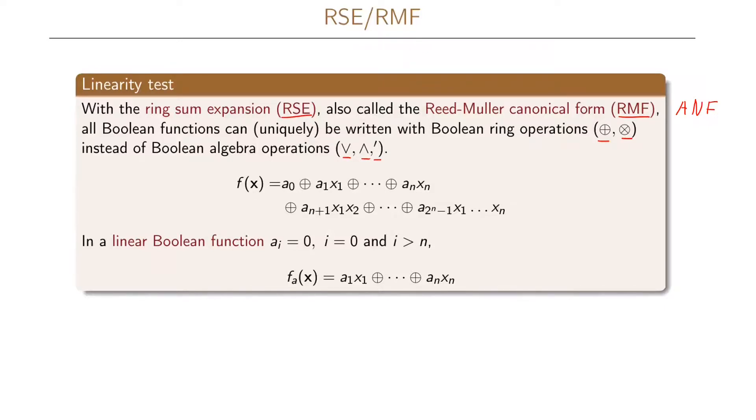Using this canonical form, we write the function f of x, and we have a function now with n variables. So this will be a sum of all possible combinations of up to n variables with the constant either 0 or 1 for each of these terms. And since there are 2 to the n different terms, we have 2 to the n different indices for our a here. So the last one will be 2 to the n minus 1, while the first one is a_0. Now we have the case that for a linear Boolean function, all the a_i's will be 0 where i equals 0 and i is larger than n. So if this is the case, our Boolean function can be written in this form instead, and this is our linear function.